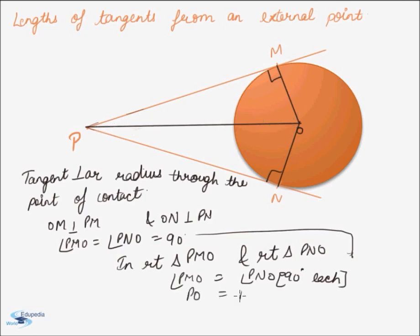Therefore, side PO of both triangles will be the same because of common hypotenuse.